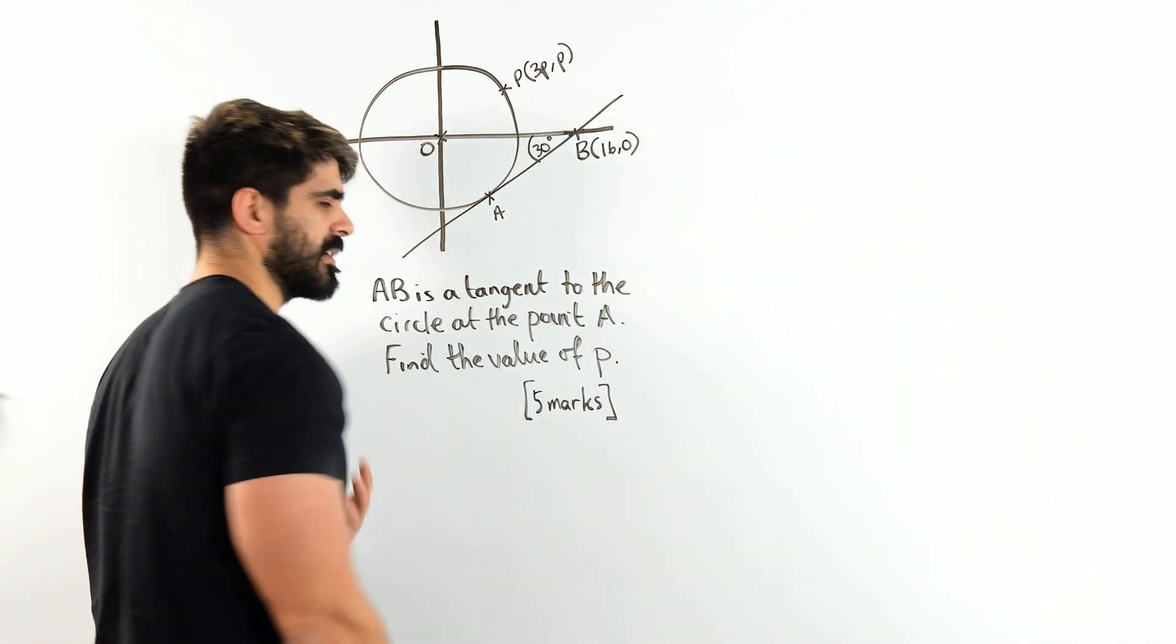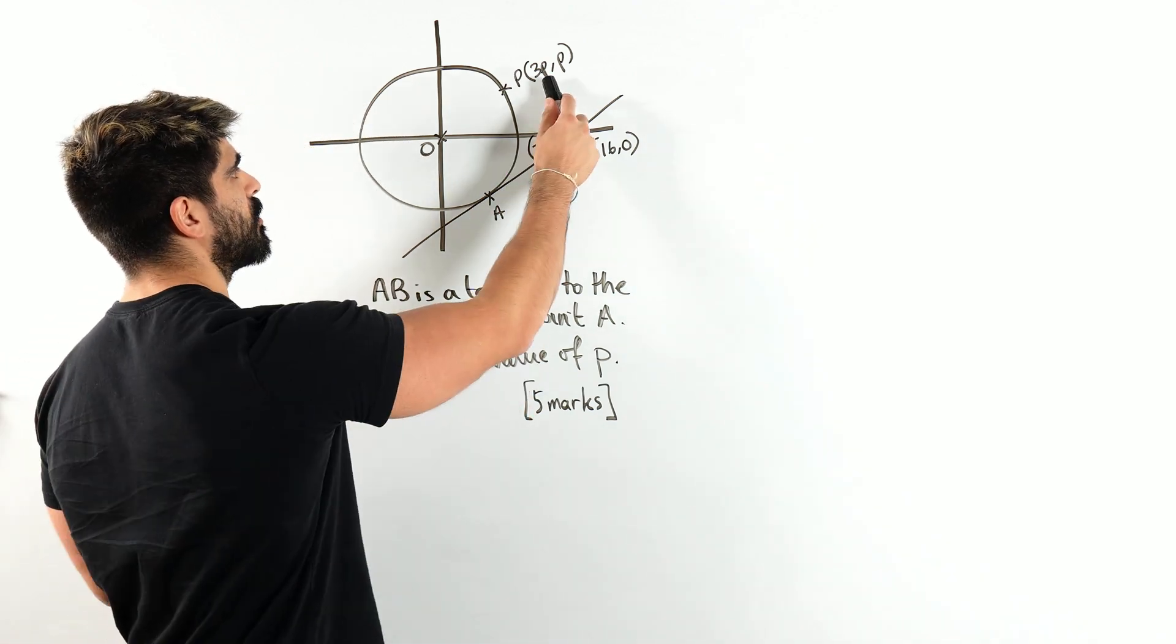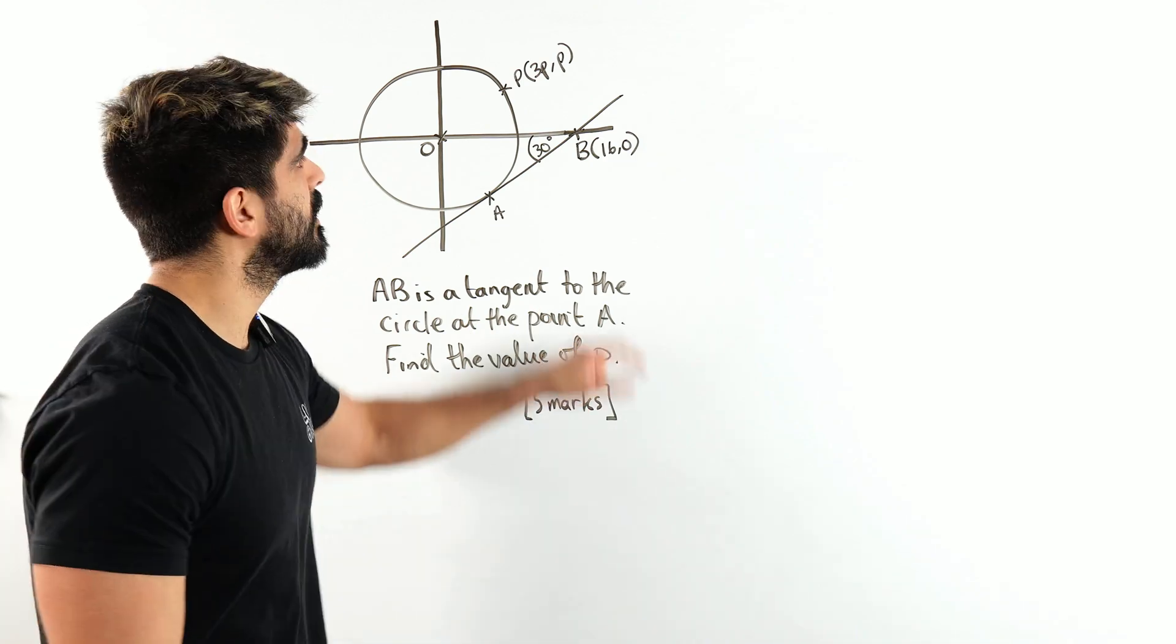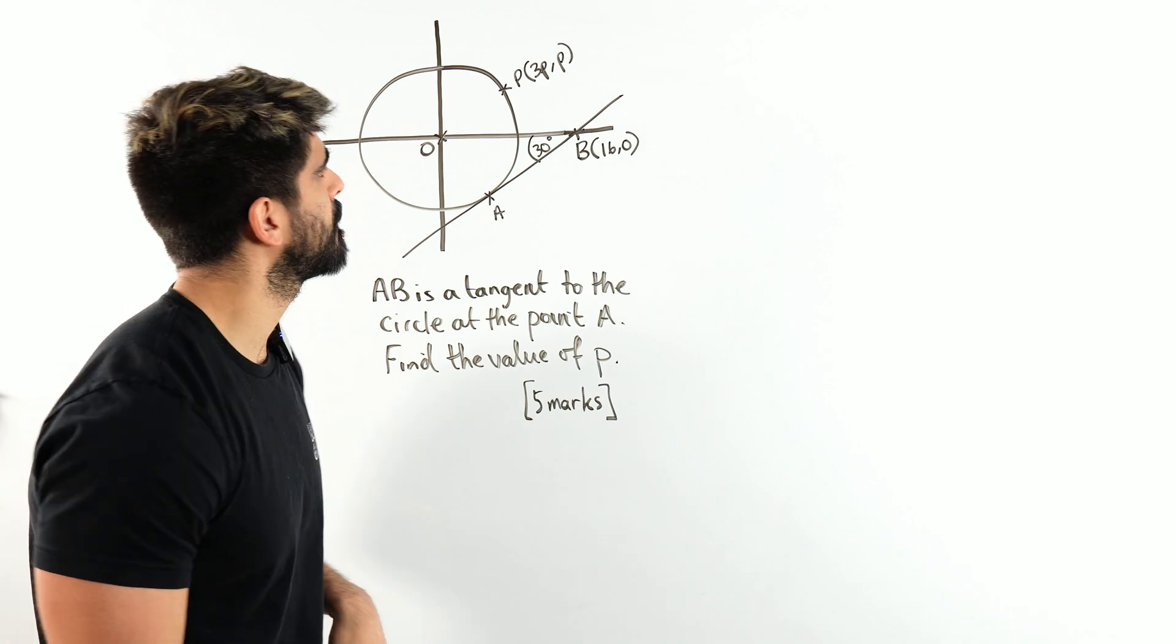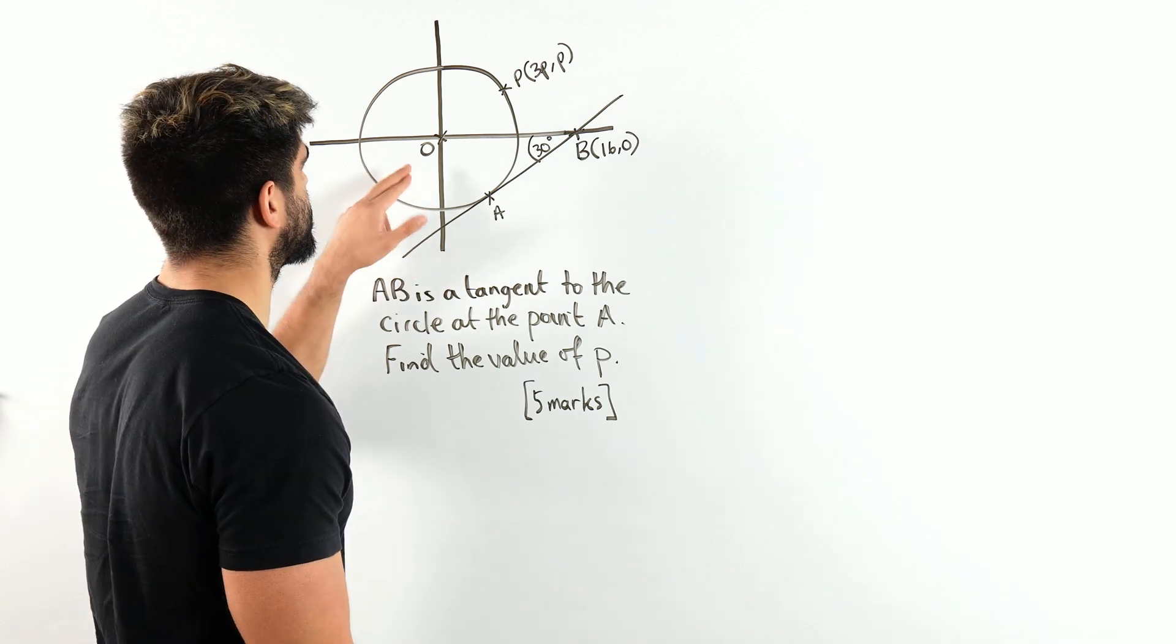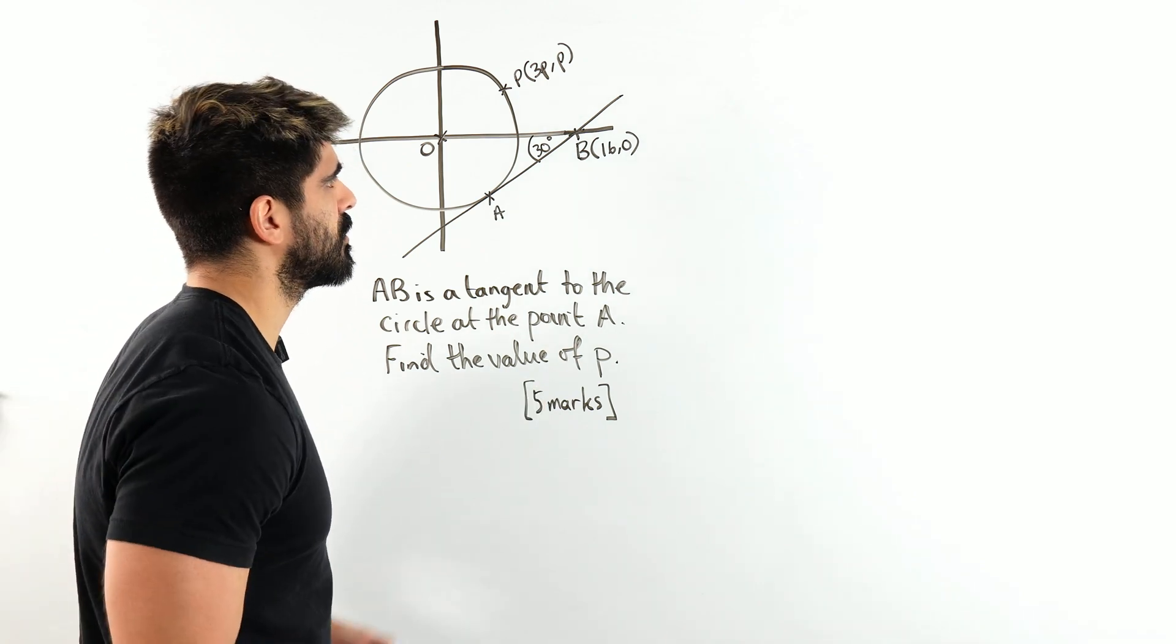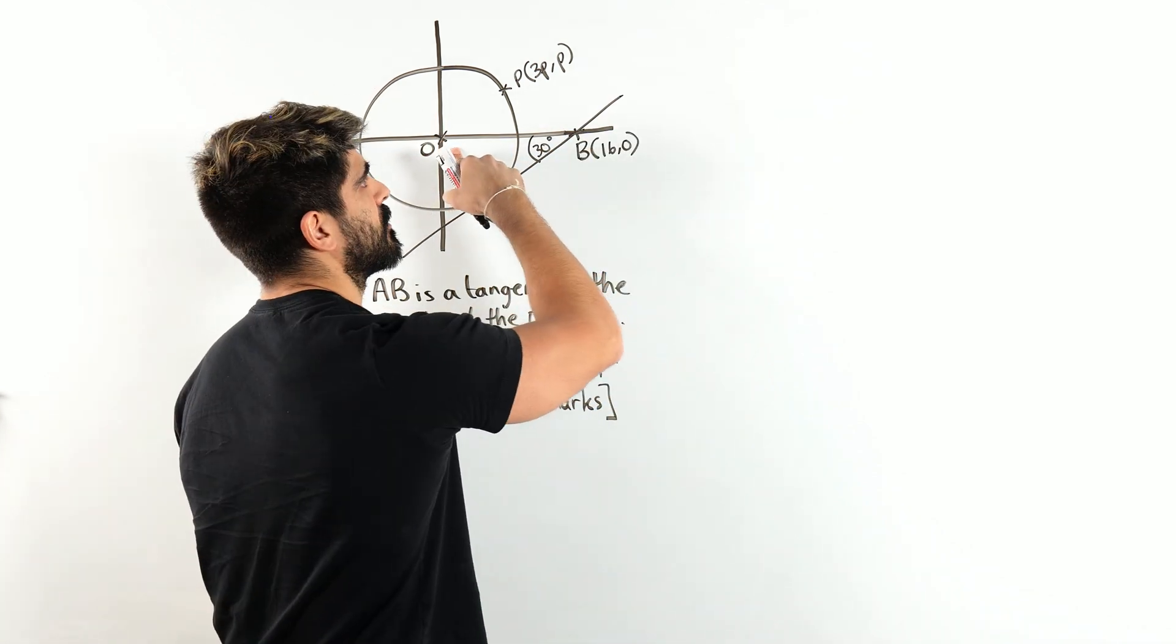Now, the first thing I would be thinking about is this coordinate being on the circle. If I know the equation of the circle, then I could just sub in these coordinates and figure out what P is. But I don't have the equation of the circle. Now they would say in the question that the center is at the origin, which I've indicated over here.